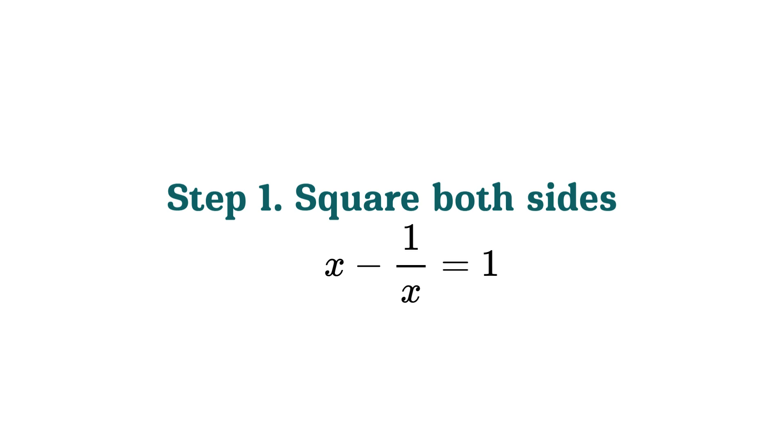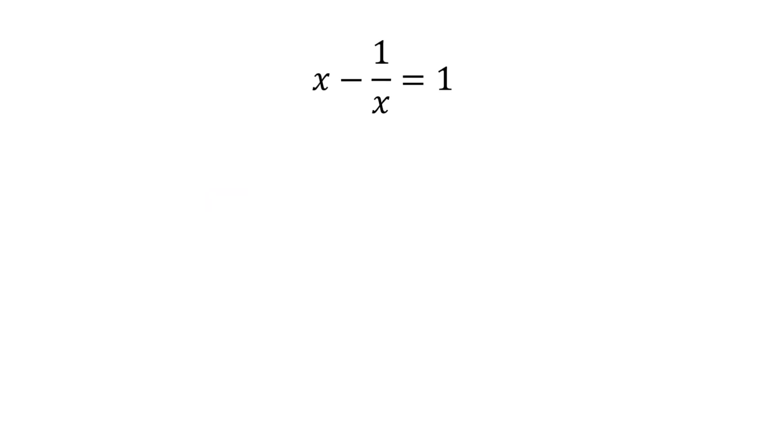First step. Let's take our starting equation, x minus 1 over x equals 1, and square both sides. When we expand the left side, we get x squared minus 2 times x times 1 over x plus 1 over x squared. And on the right, 1 squared is 1.